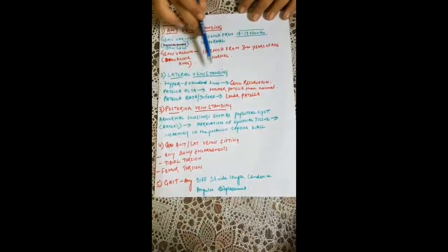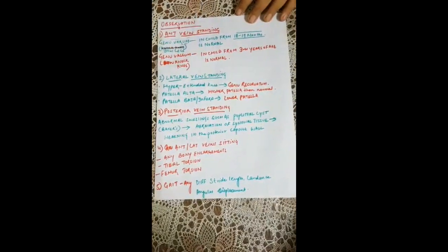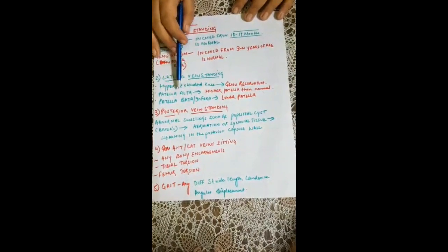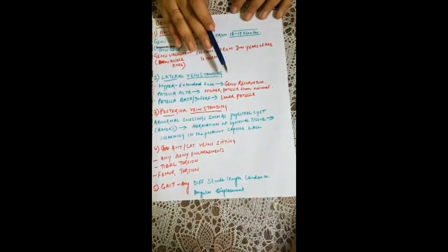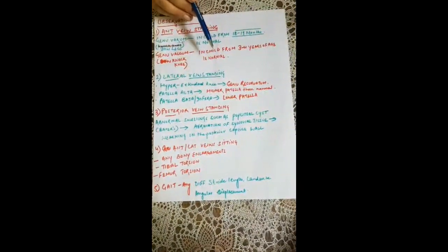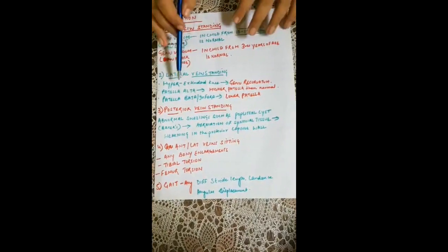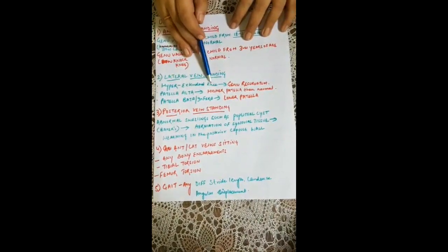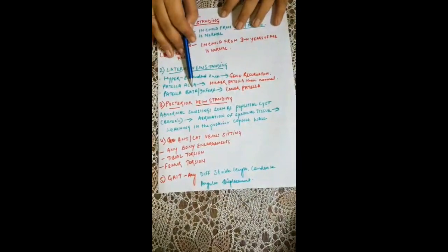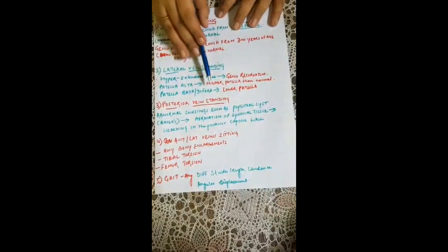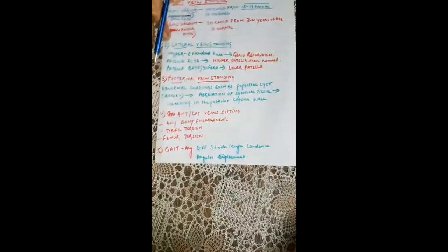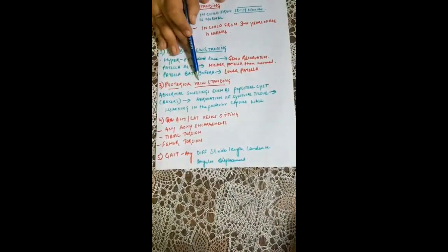In lateral view standing, the examiner looks for hyperextended knee, patella alta — where the patella is higher than normal due to a mechanical injury or abnormal mechanism — and patella baja or patella infra, where the patella is lower than its normal position.